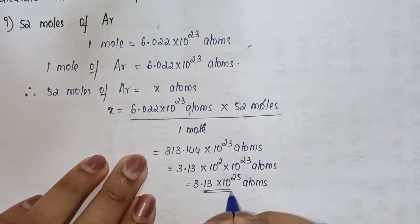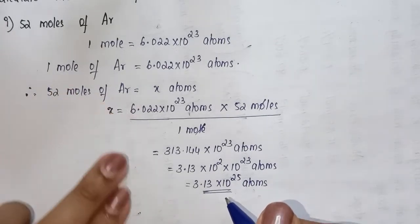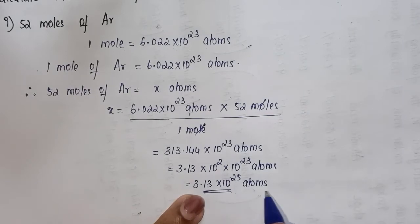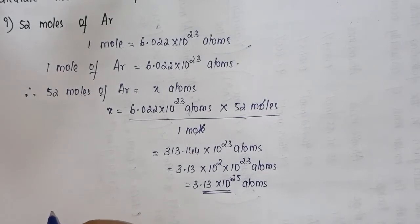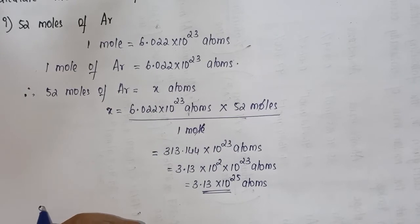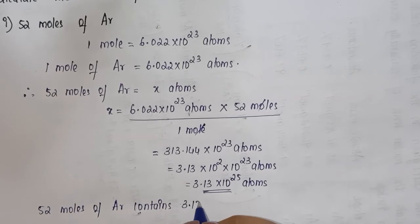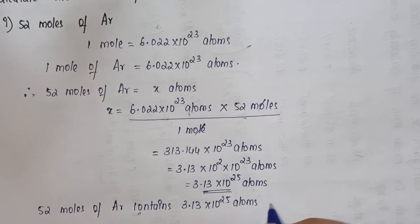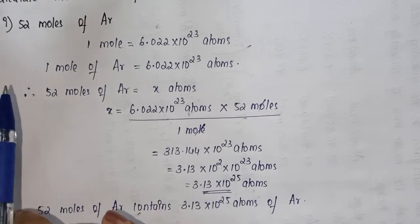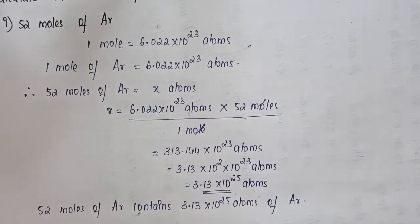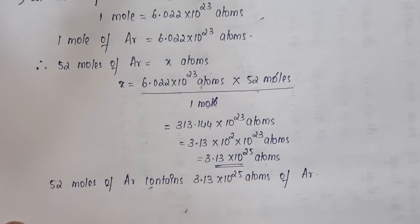So we can state that 52 moles of argon contains 3.13 × 10²⁵ atoms of argon. That is the answer for the first part. Similarly, let's look at the second question.